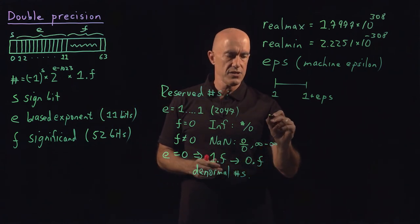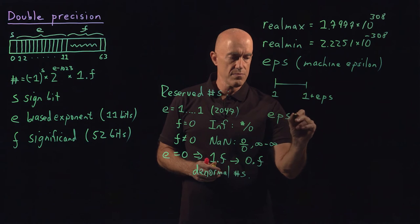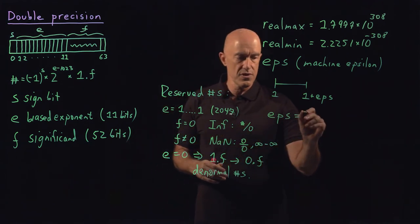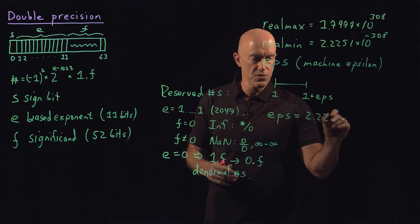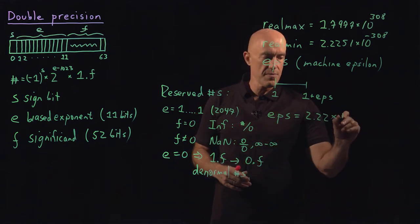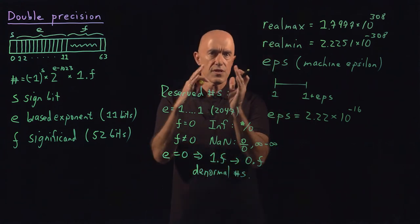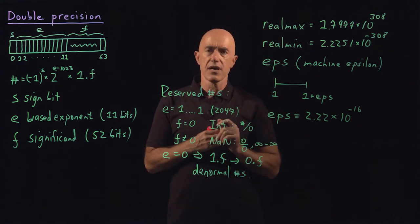If you do that calculation, then you would get machine epsilon turns out to be a small number, but it's 2.22 times 10 to the minus 16. So that tells you basically how compact the numbers are in the computer.